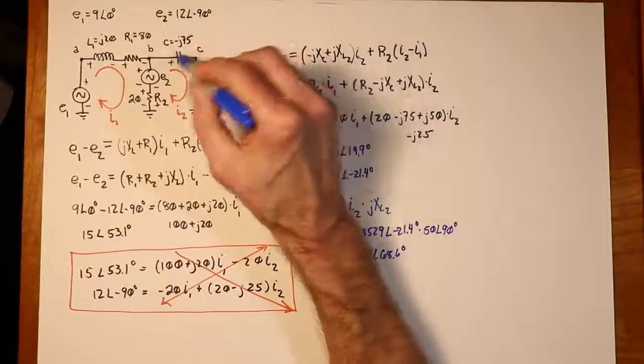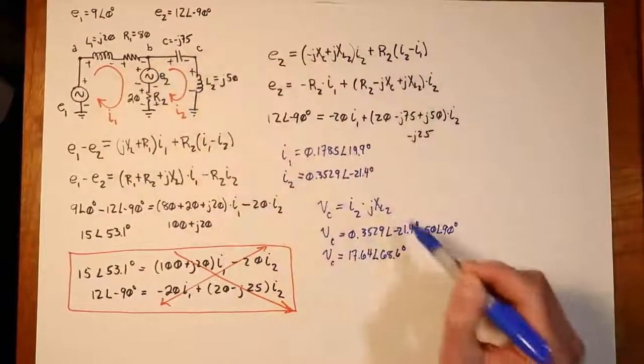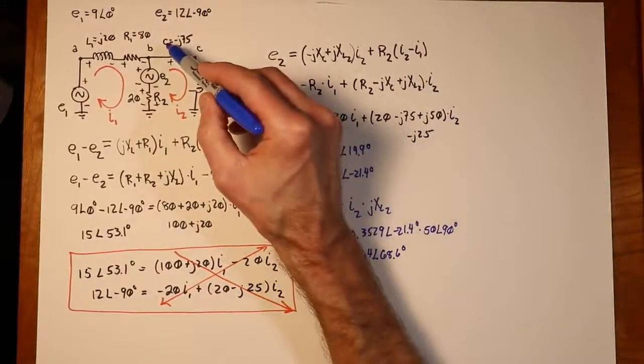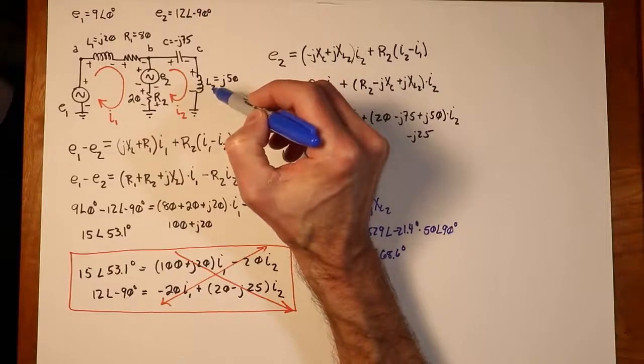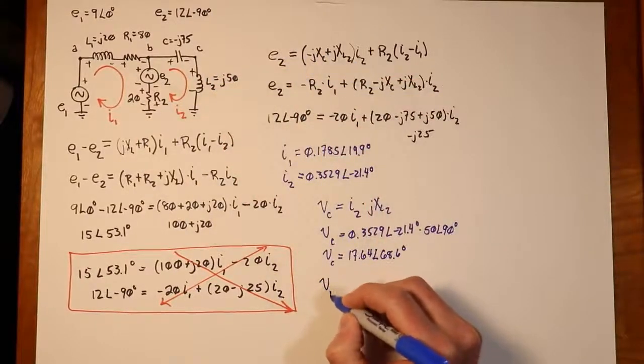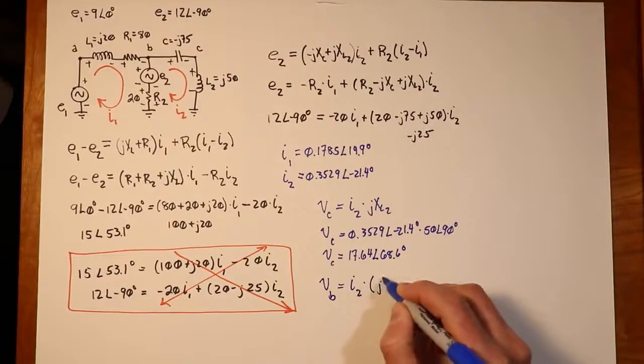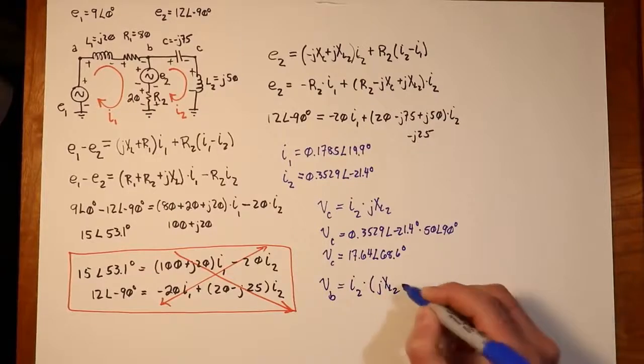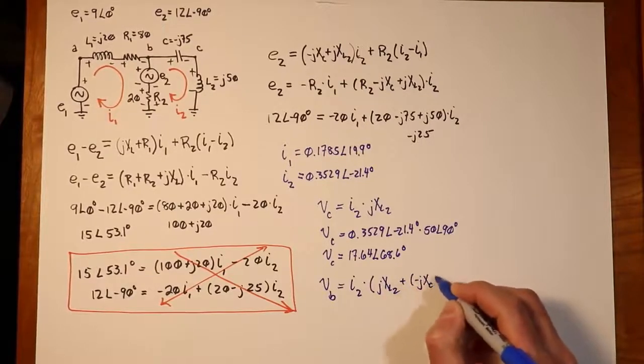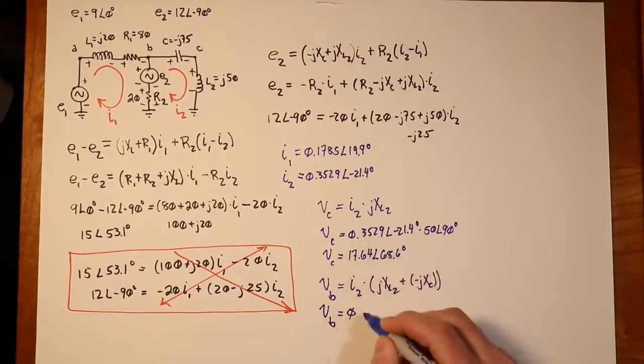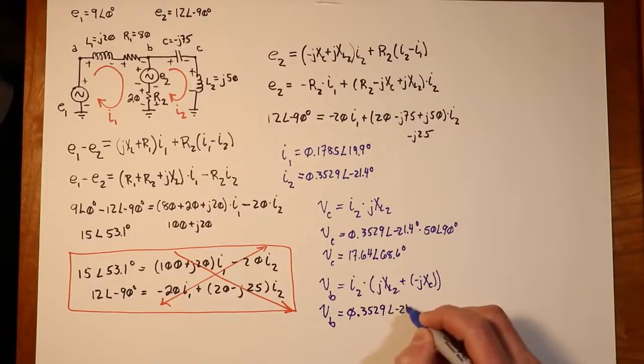I already know this one current. All I have to do is essentially the same computation, except it's driving through the capacitor and the inductor. So, if I did that same thing to get Vb, I could say, well, that's I2 times the Jxl2 plus the negative Jxc. So, I'm just plugging those in. We already know what that I2 current is. 3529 at minus 21.4.